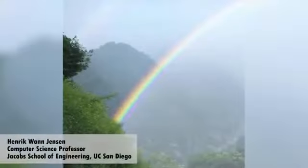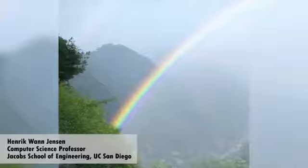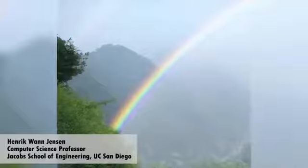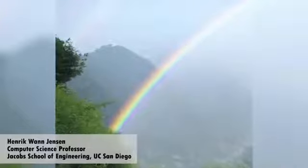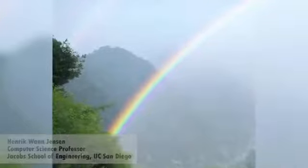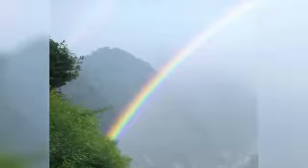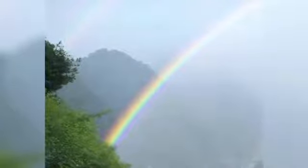This picture shows a rainbow simulation using our method. As can be seen, it captures the bright primary rainbow, as well as a little bit of a supernumerary bow, and you can also see a sort of faint double rainbow in the picture.